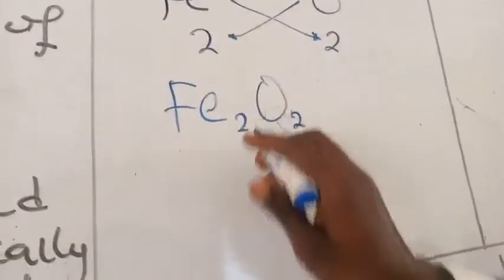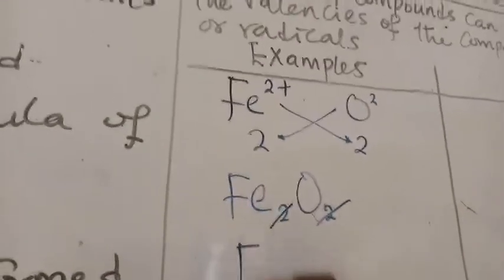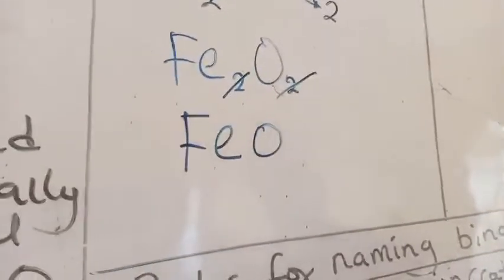Since they can cancel out, they cancel out themselves. And then you have FeO. So this is iron-2 oxide.